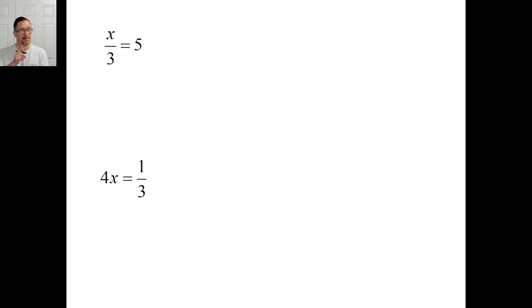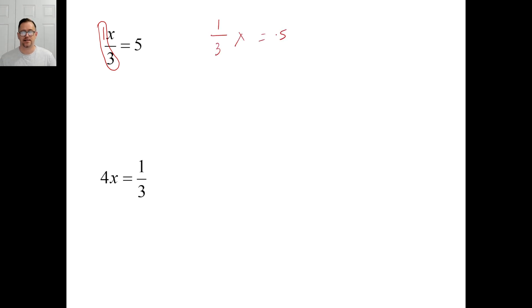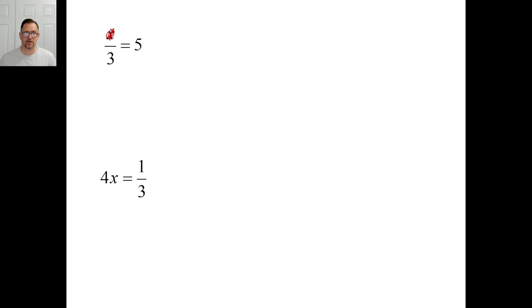Try problem C — remember how to rewrite it with a fraction? There's actually 1x sitting there, so you can write it as 1-third x equals 5. Since this is a fraction, multiply by the reciprocal, which is 3 over 1. What's 5 times 3 over 1? 15. You can check it: if the answer is 15, stick it back in — is 15 divided by 3 equal to 5? Yes.